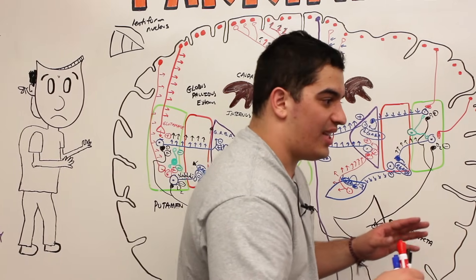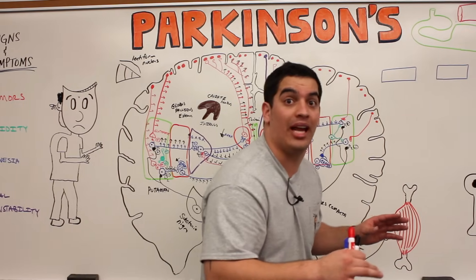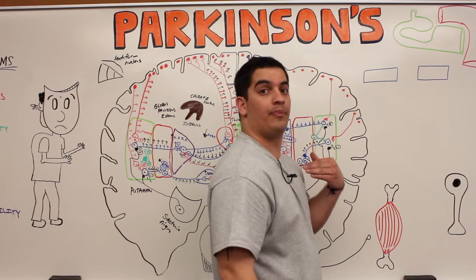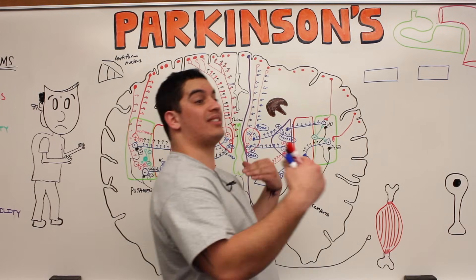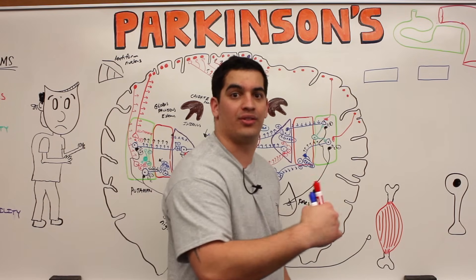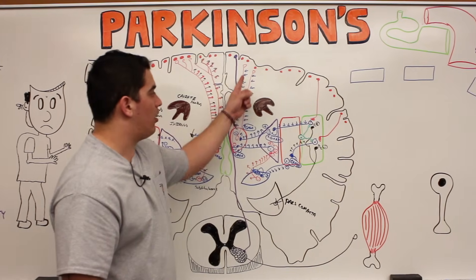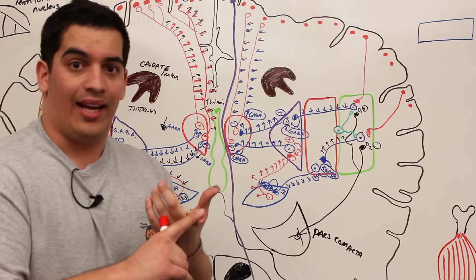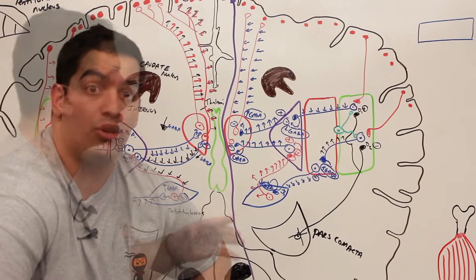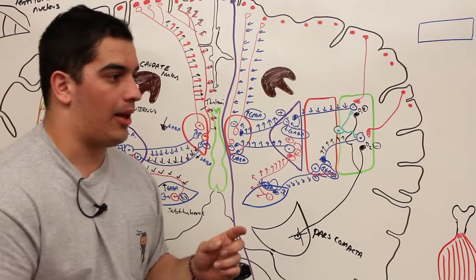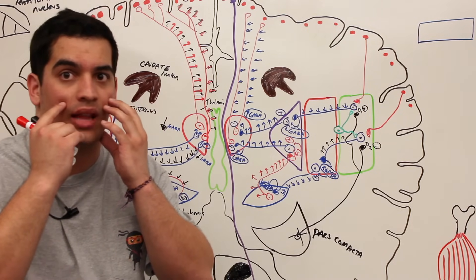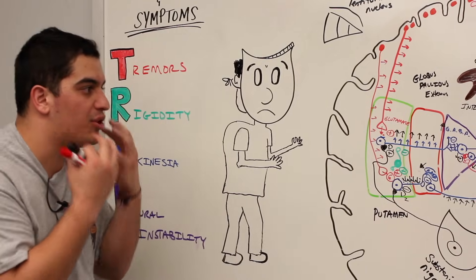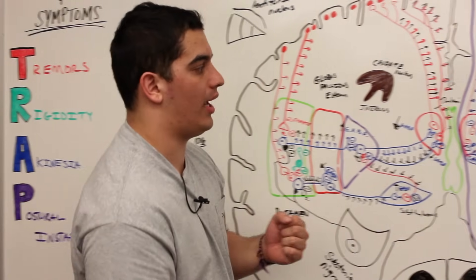Once they get moving, if you try to have them stop on a dime they won't be able to — they'll have a hard time stopping the movement. And if you push on them, they experience retropulsion — falling back because they can't resist that motion. This abnormal effect on the direct and indirect pathways causes akinesia or bradykinesia, postural instability, and also affects the muscles of facial expression, leading to what's called 'mask face' — an expressionless face.